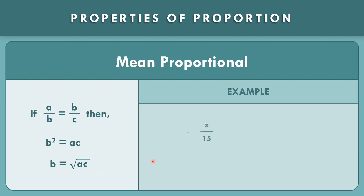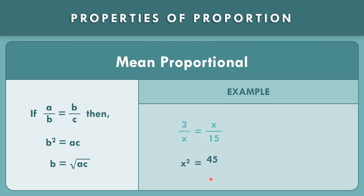Let us proceed to solve this example: 3 over x is equal to x over 15. Let us see what could be the mean proportional of 3 and 15. So x times x, that is x squared, equals 3 times 15, that is 45. If we get the square root, that becomes x is equal to the square root of 45.